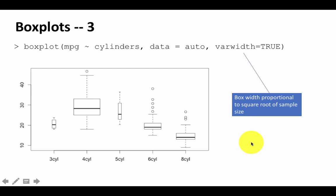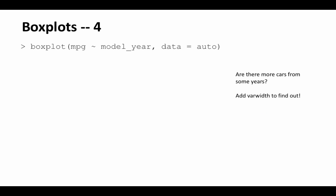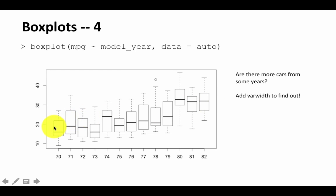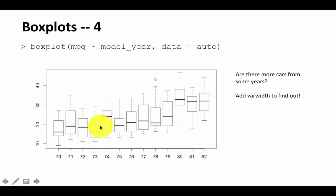You can also do box plots by model year: boxplot(mpg ~ year, data=auto). Now you're seeing comparisons over time, from year 70 to 82. There's a clear trend toward better fuel efficiency cars over time — looking at the medians, you can see them gradually increasing. You could also add var.width=TRUE to show how many cars were present for each year proportionally.